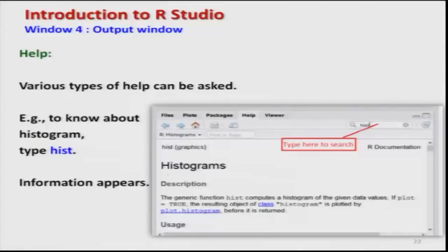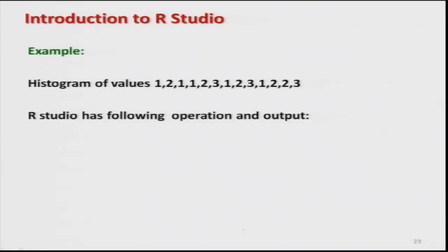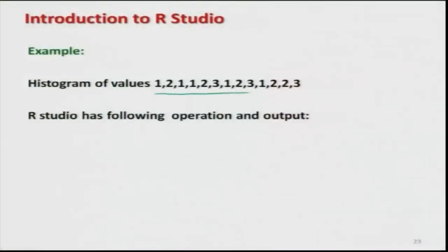Now let me take a simple example to illustrate everything explained so far. Suppose I have some data containing values 1, 2, and 3, and I want to create a histogram. Let us first enter this data and then create the histogram. In the first window, I type the data and give the commands. I have given all the values inside a variable x and then the command to create a histogram of x. I will then highlight these lines and click Run.